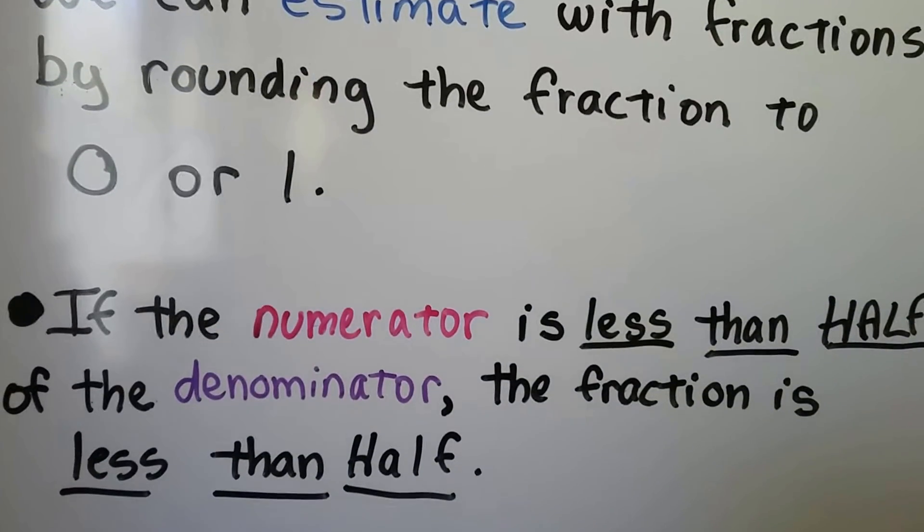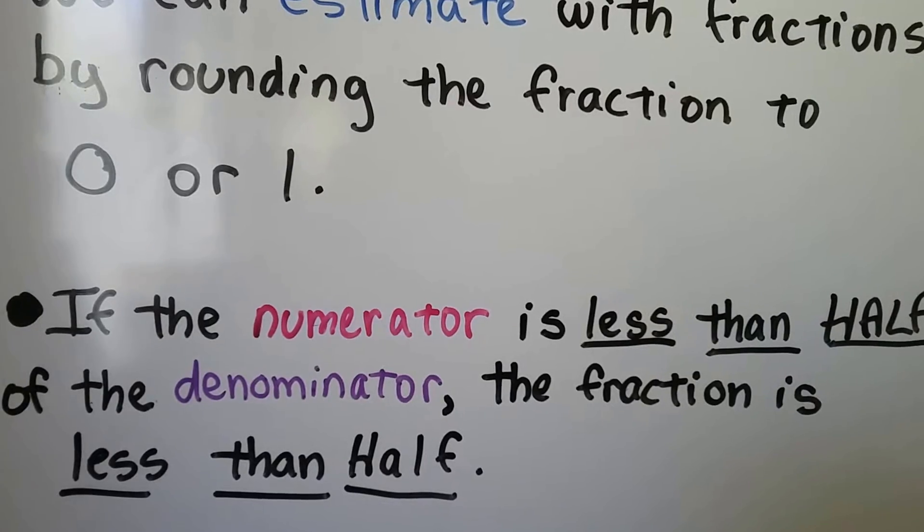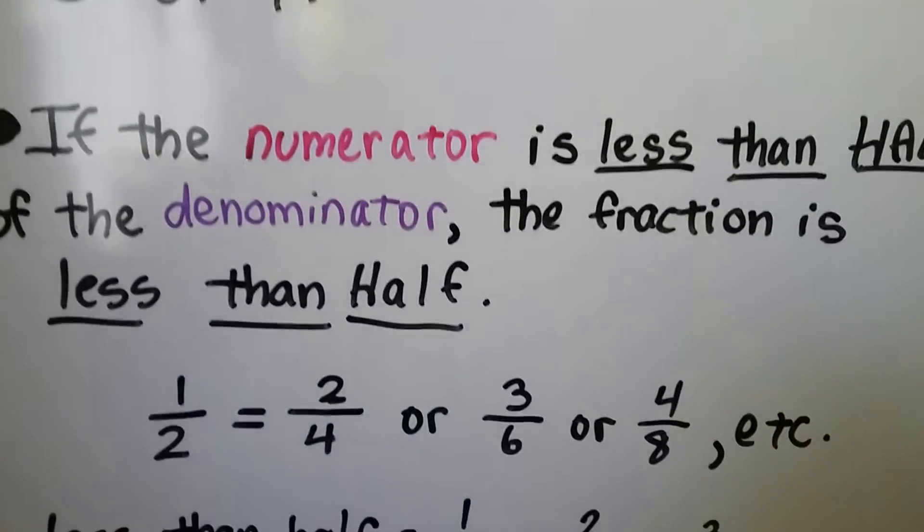We can estimate with fractions by rounding the fraction to 0 or 1. If the numerator is less than half of the denominator, the fraction is less than half.